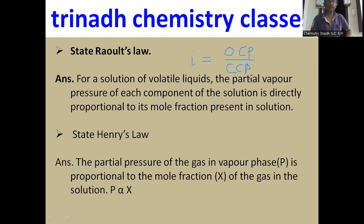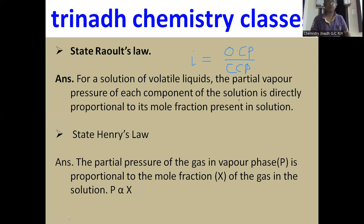Similarly, for barium chloride, the Van't Hoff factor is 3, because it gives 3 ions: one Ba²⁺ ion and two Cl⁻ ions. These are some of the important two-mark questions from the Solutions topic.